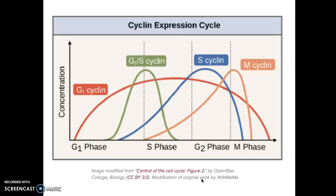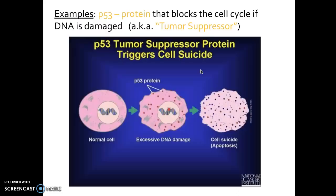Just like you might have someone proofread an English paper before turning it in, these internal regulatory proteins act like proofreaders — checking that what happened inside the cell happened correctly, then giving it a green light to move to the next stage. For example, the G1/S cyclin works at the end of the G1 stage, checking that the cell has grown correctly and duplicated all organelles, so it's ready to move to the S phase. Its concentration is highest at the end of G1 or beginning of S phase. Then the S cyclin checks that the DNA was copied correctly.